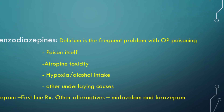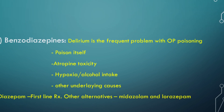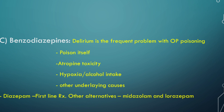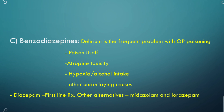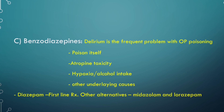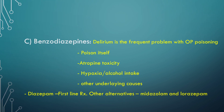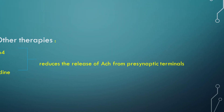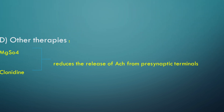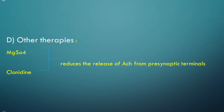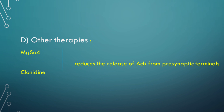Benzodiazepines are the most commonly used drugs in OP poisoning because delirium is the most frequent associated problem. Causes of delirium include the poison itself, atropine toxicity, hypoxia, alcohol intake, or other underlying medical causes. Diazepam is the first-line therapy for seizures in OP poisoning; if unavailable, midazolam or lorazepam can be given alternatively. Other therapies like magnesium sulfate and clonidine can also be used — both reduce the release of acetylcholine from presynaptic terminals, improve neuromuscular junction function, and reduce CNS over-stimulation.